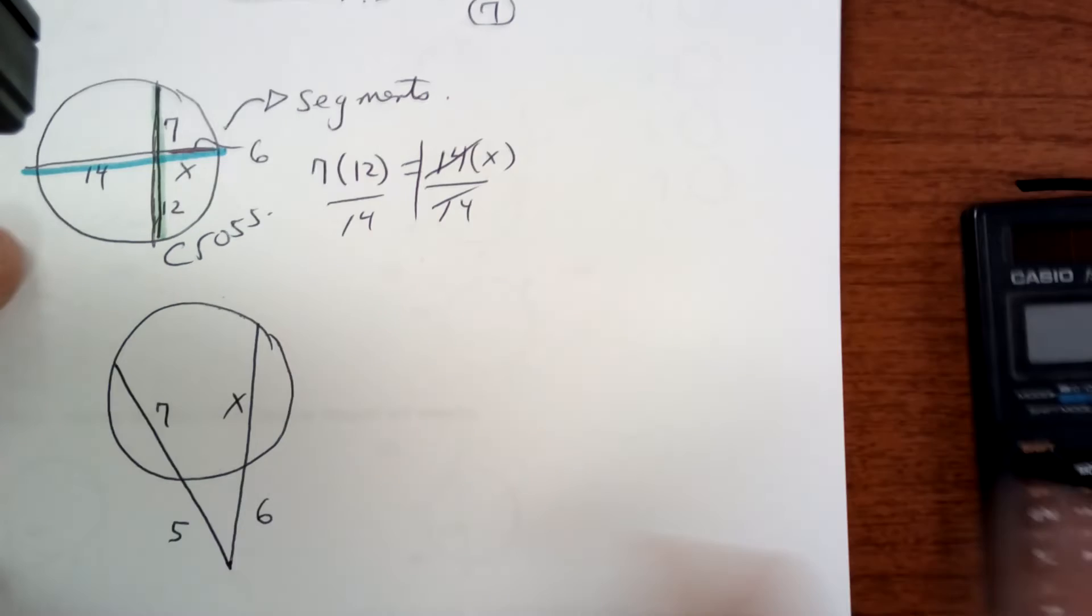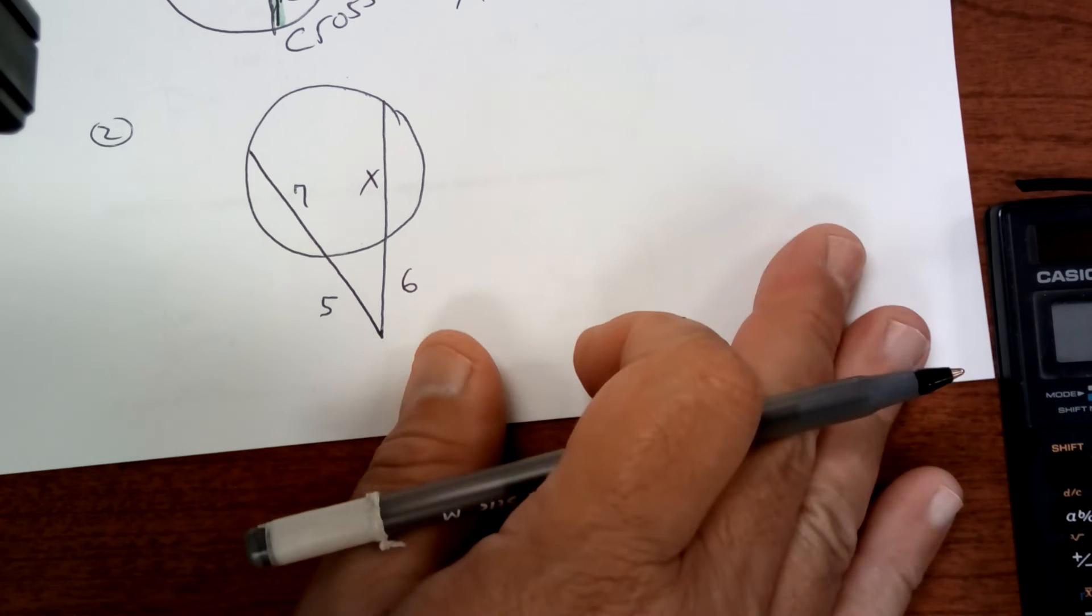Let's take a look at this next one. Draw this one. This one's on the outside. But again, it's segments and not angles.